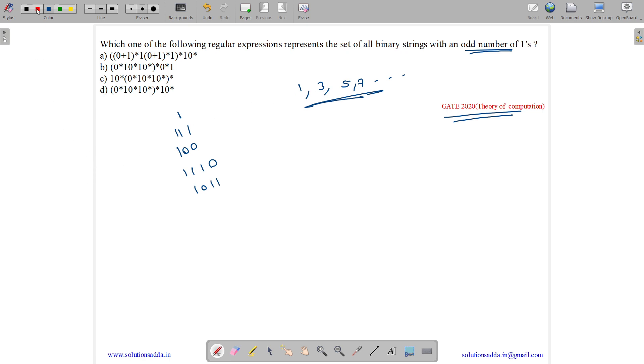Here you can easily observe that this is basically a wrong question. See, can we generate 001 and 100? Both have only a single one, thus these must be accepted.